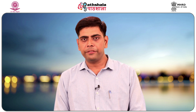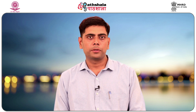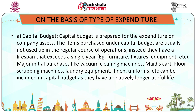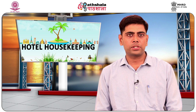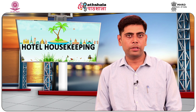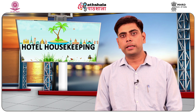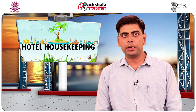On the basis of type of expenditure, budgets can be classified into three types. The first is the capital budget, prepared for expenditure on company assets. Items purchased under capital budget are not used up in regular operations and have a lifespan exceeding one year — for example, furniture, fixtures, and equipment. Major initial purchases like vacuum cleaning machines, maids' carts, floor scrubbing machines, laundry equipment, and linen uniforms are included in the capital budget as they have a relatively longer useful life.